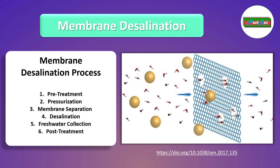Desalination: as water molecules pass through the membrane, they leave behind the concentrated salts and other impurities, forming what is known as brine or reject stream. This brine contains the removed salt and is discharged from the RO system.